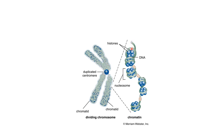Many such nucleosomes stack together to form chromatin. Many nucleosomes are stacked together to form fibers known as chromatin. And the chromatin is further coiled and tightly condensed to form a chromosome. That is how the DNA, or the genetic material, is condensed and tightly packed within the nucleus of the cell.